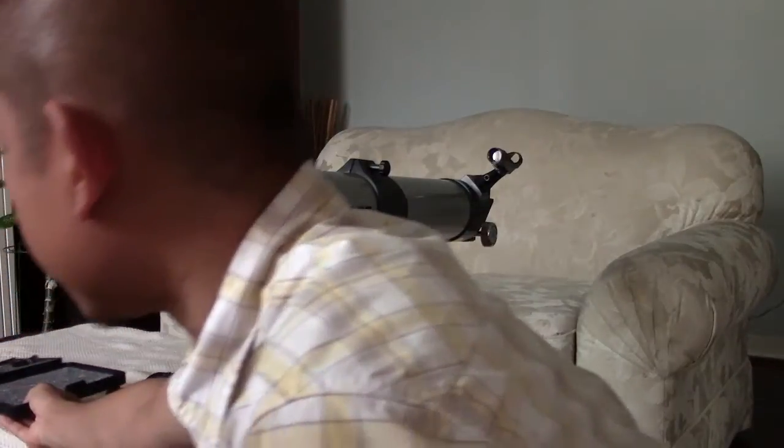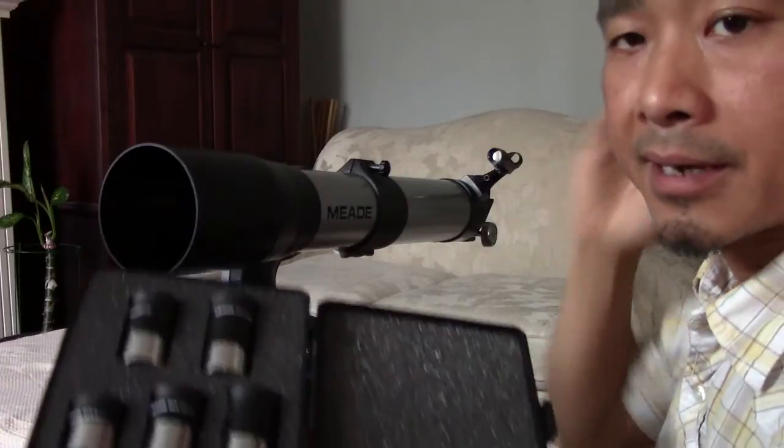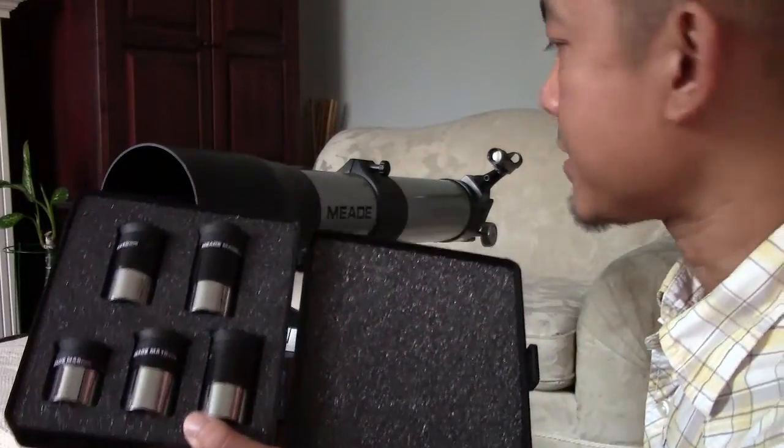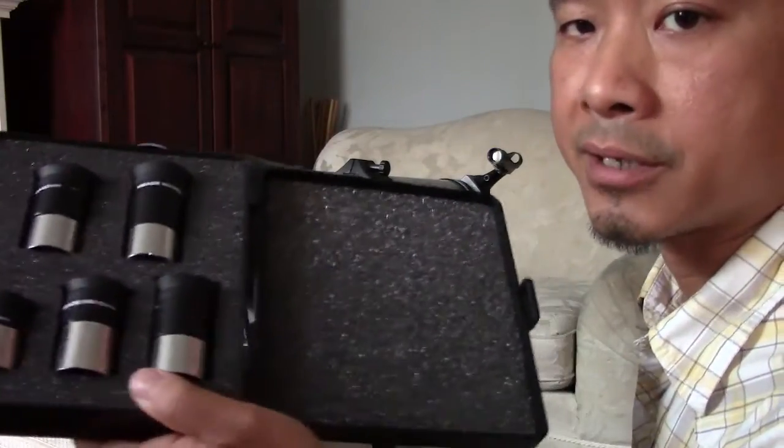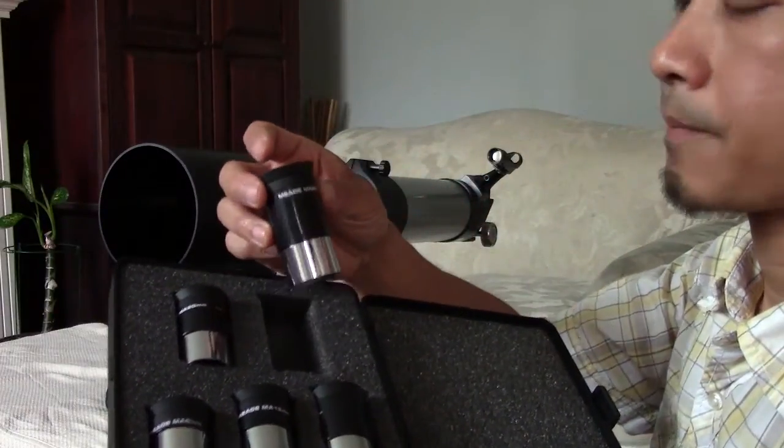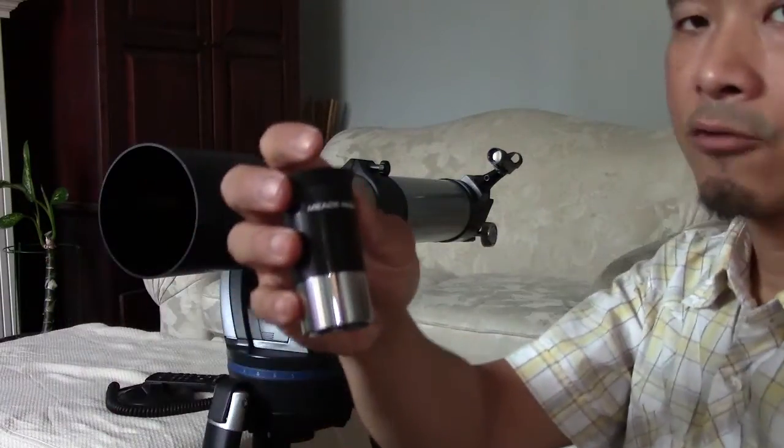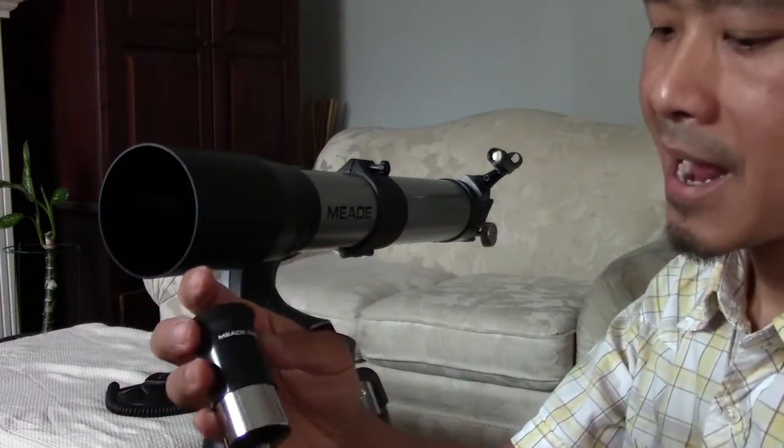Conveniently, the package came with five eyepieces. Now if I were to upgrade anything on this telescope, it would be the eyepieces, because the provided eyepieces are what's called the MA series from Meade. These are the modified Achromats. They're not that bad.